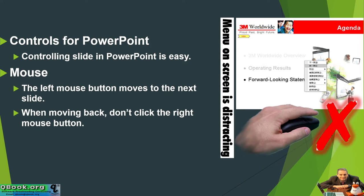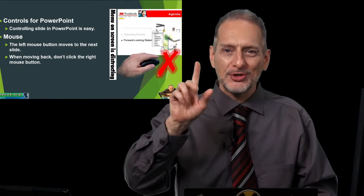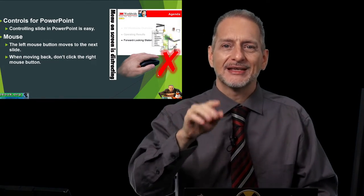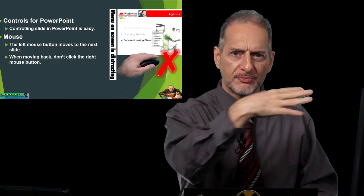So when you're moving back, don't click the right mouse button, and I see many people do this. When you click the left button, it's the next slide, just like clicking on the screen. Click, next slide. Click, next slide, right?